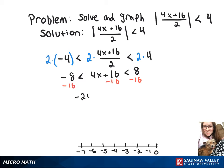Giving us negative 24 is less than 4x is less than negative 8. And our last step is going to be to divide by 4.